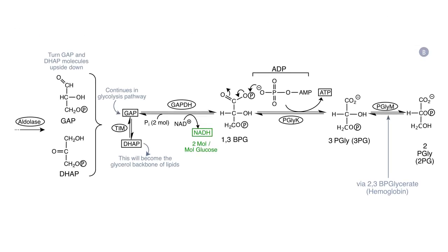Now let's look at panel B. Imagine that a cell is committed to make as much energy as it can — for example, the stand-up, sit-down scenario we discussed. In that case, the enzyme TIM, or triosephosphate isomerase, is going to very quickly interconvert dihydroxyacetone phosphate and glyceraldehyde-3-phosphate, and glyceraldehyde-3-phosphate is the molecule that progresses along the glycolysis pathway.